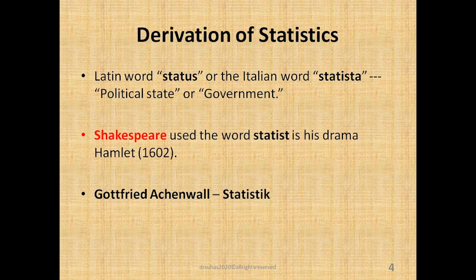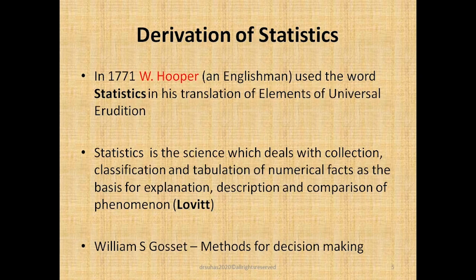So that is how the word 'status' or 'statista' has come to mean a political state, because its fundamentals were used to run a government, a state, or a kingdom in older times. Later on, Gottfried Achenwell, a German scientist, used the word 'statistic' in a German university way back in 1749, and the meaning was again to mean a political state — the political science of different countries. Then in 1771, W. Hooper, an Englishman, used the word statistics for the first time in his book — a translation of 'Elements of Universal Erudition' — and in that book statistics was defined as a science that teaches the political arrangement of all the modern states of the known world.